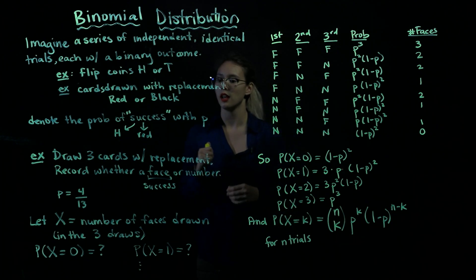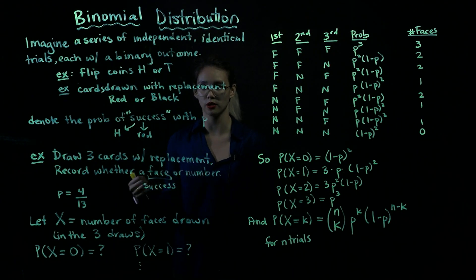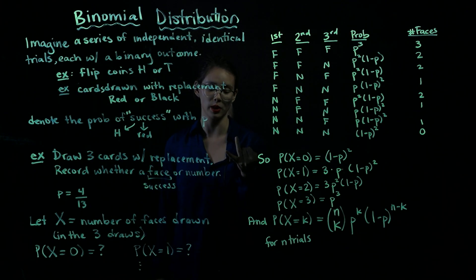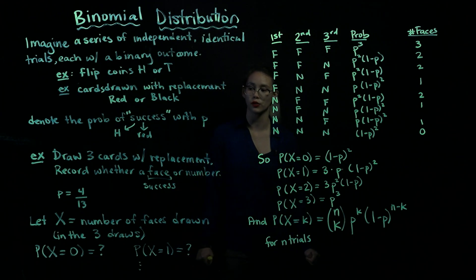Okay, so there are 13 different types of cards, twos, threes, and so on, and four different faces, Jack, Queen, King, Ace. So the probability of getting a face card is four out of 13.